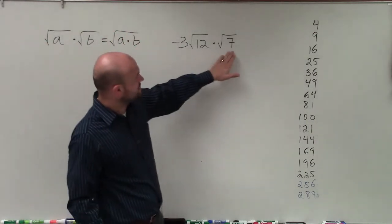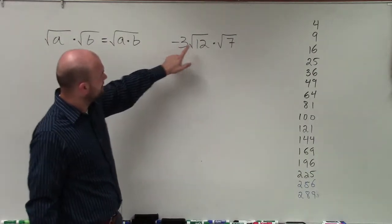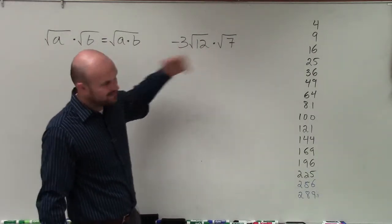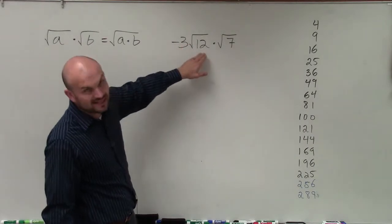So therefore, I can multiply 12 times 7, and I can multiply negative 3. You could say there's a 1 on the outside of here as well, and multiply those. But you can't multiply outside to inside.